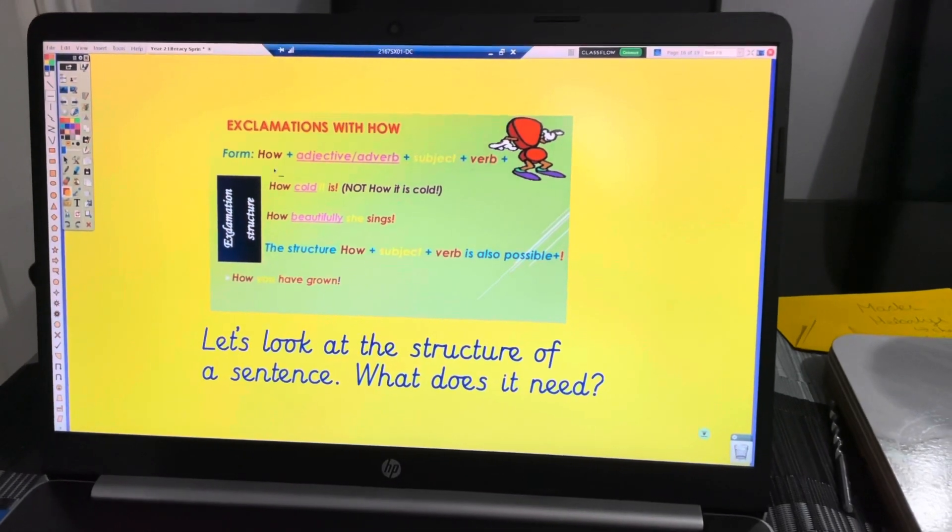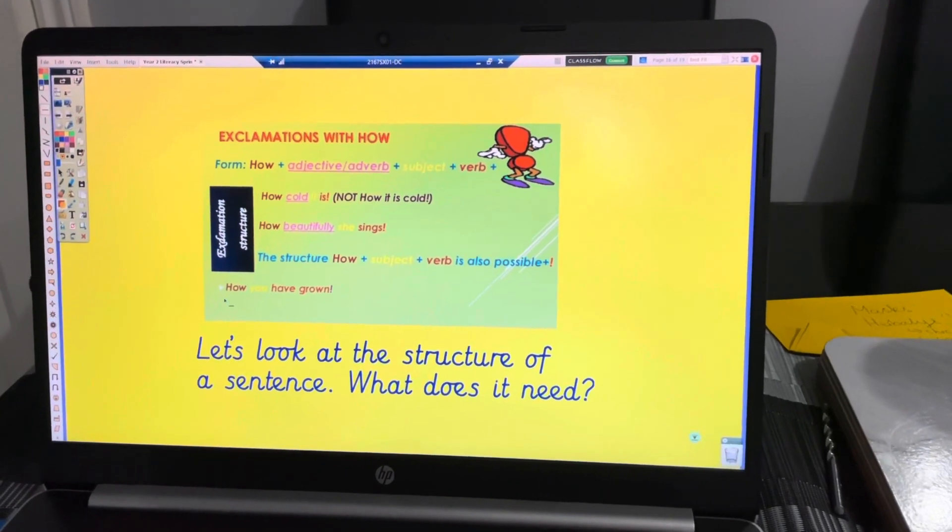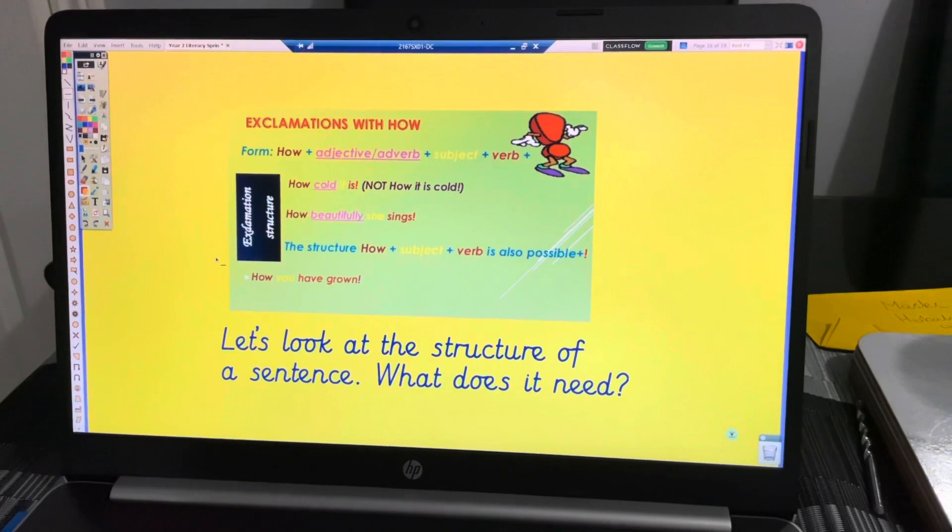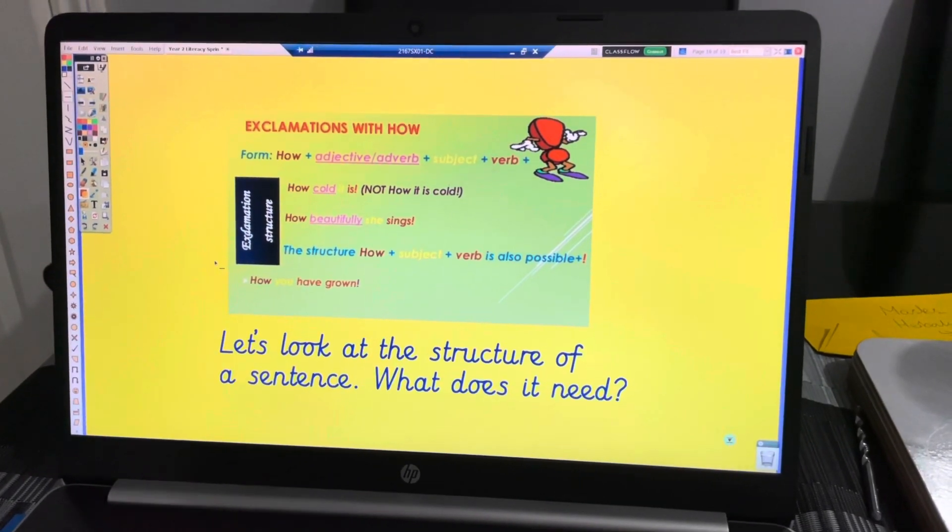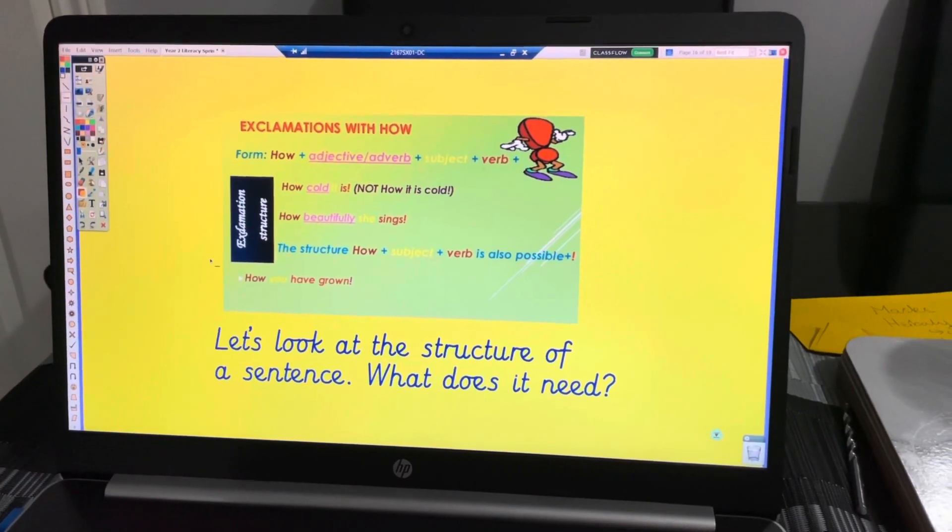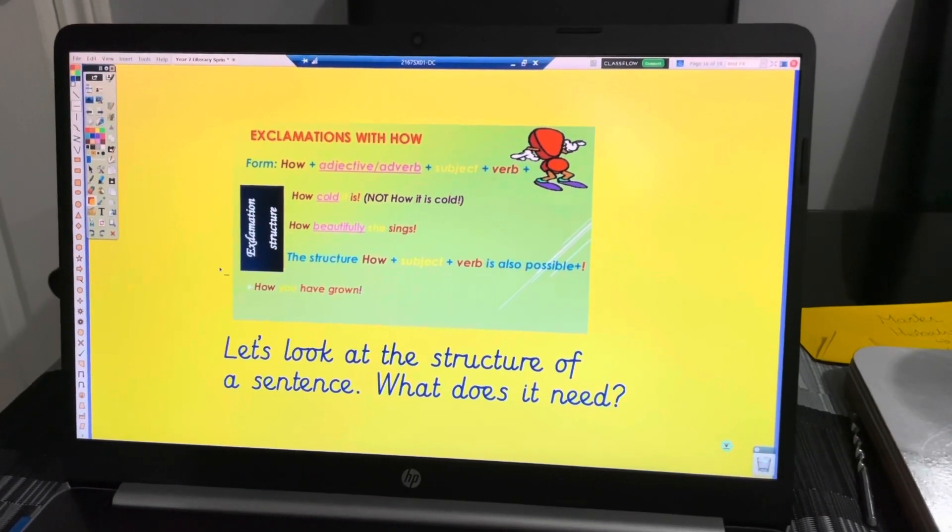Exclamatory sentences start with 'what' or 'how', but you have to be careful not to turn them into questions. It's not 'what did the boy do?' - it's 'what a kind boy he was!'